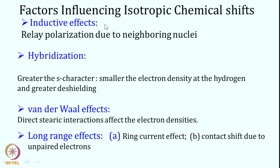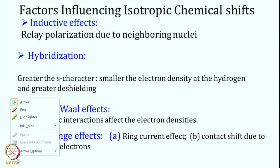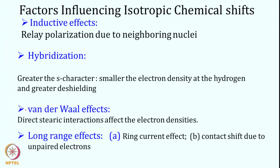The third factor is the inductive effect — a relay polarization to neighboring nuclei. Even a group that is not directly connected but is a few bonds away can induce polarization in the electron distribution, which causes changes in the chemical shift of nuclei further along the chain.